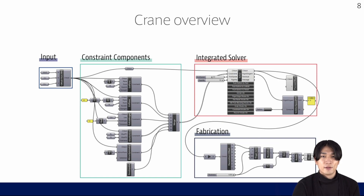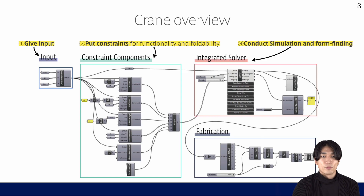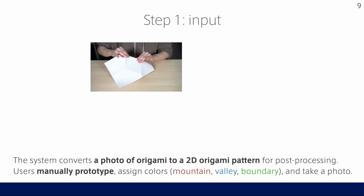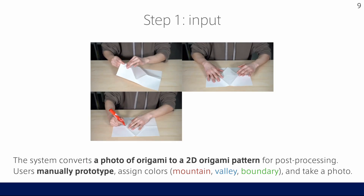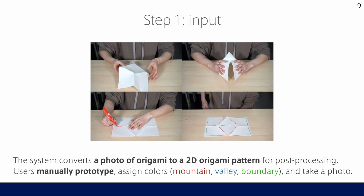Although it seems complicated, there are only four component groups. First, we give input and put some constraint components, and integrate the solver to simulate the folding transformation and find a new shape under constraints. Finally, the system calculates the thickness and hinge structure. Let's check each of them from input.